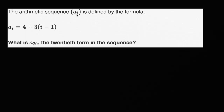We're told that the arithmetic sequence a sub i is defined by the formula where the i-th term in the sequence is going to be four plus three times i minus one. What is a sub 20?